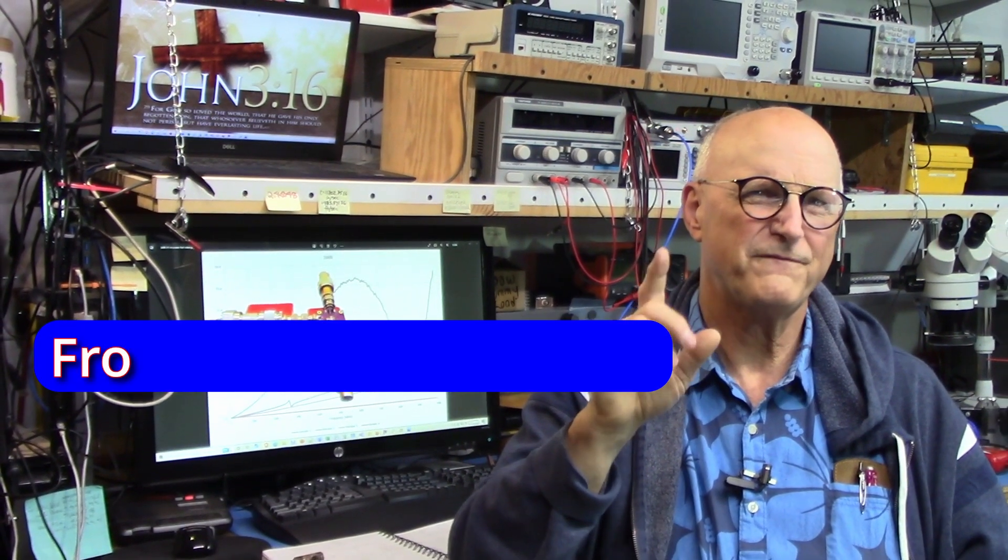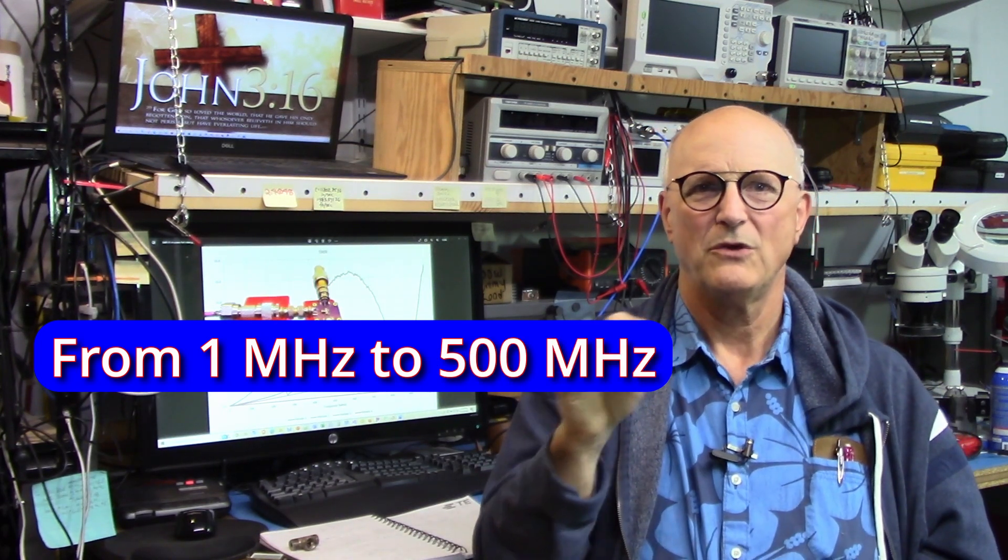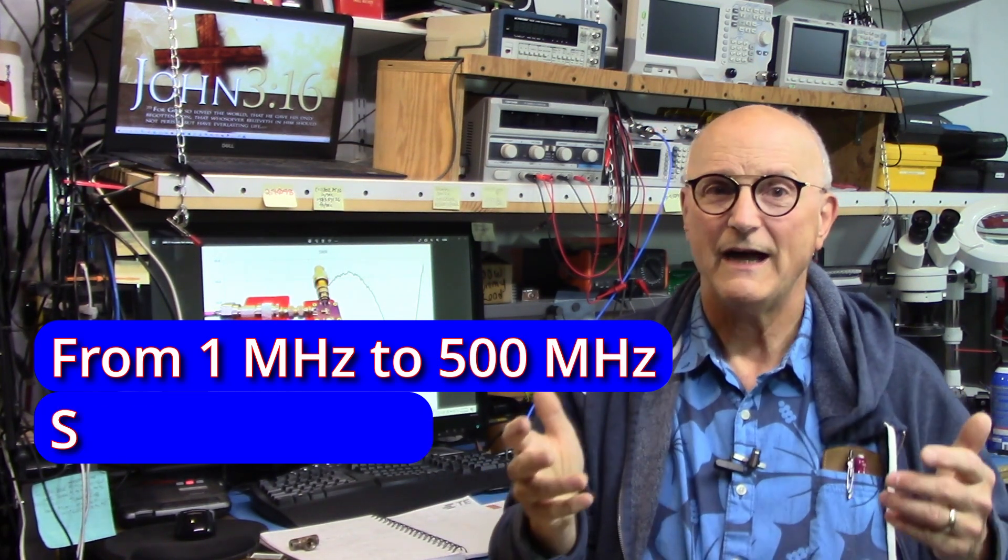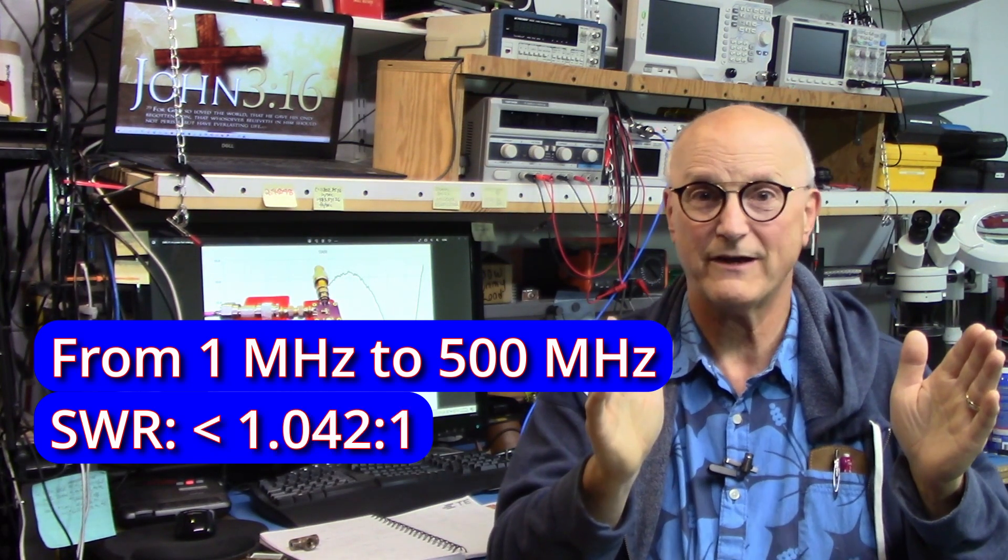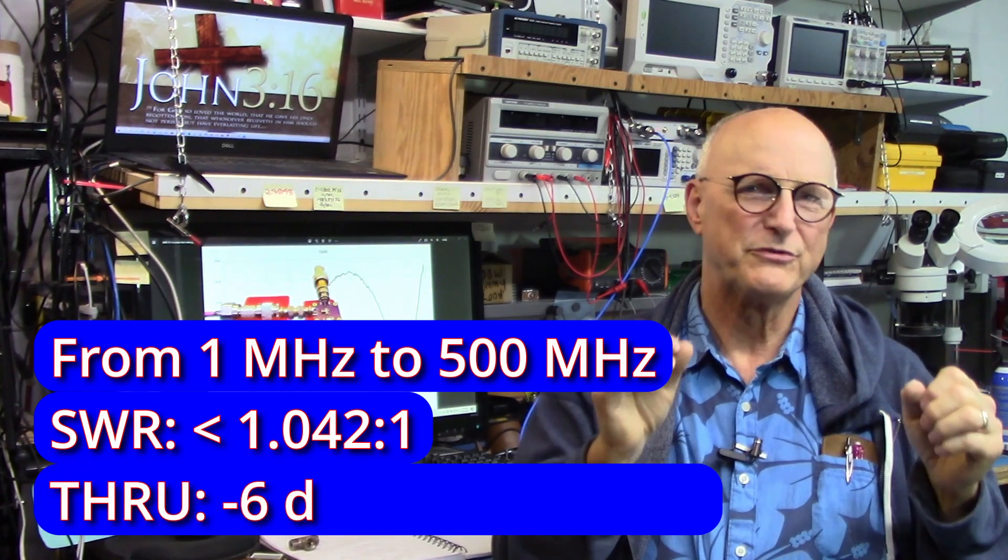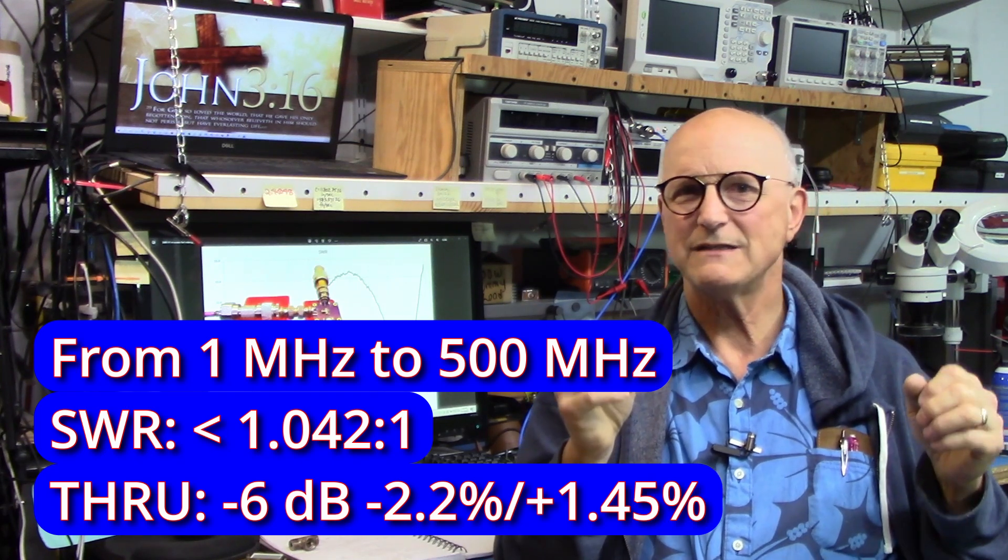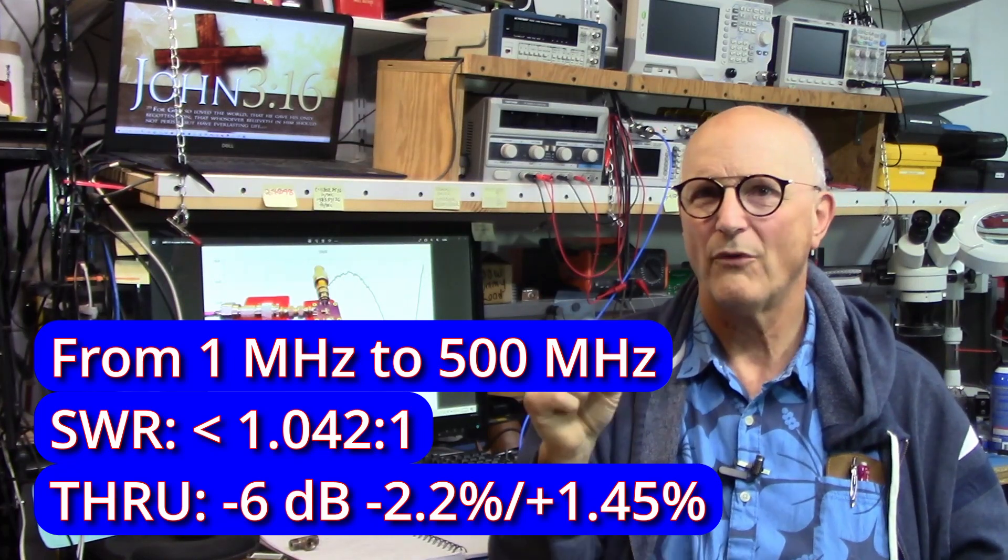Now, while I've been evaluating all my attempts to 1 gigahertz, my end goal, as you probably figured out by now, has always been 500 megahertz. When I take a look at the data with this in mind, I see that the maximum SWR from 1 megahertz to 500 megahertz is 1.042 to 1. And the through response is minus 6 dB minus 2.2% plus 1.45%. I cannot be possibly more pleased with these results.